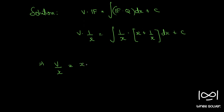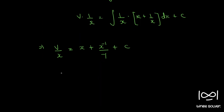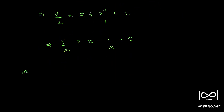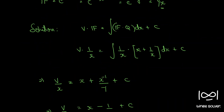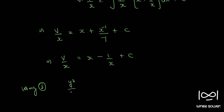Evaluating: 1/x times x equals 1, so integral of 1 is x. Plus integral of 1/x squared, which is x to the minus 1 over minus 1. So v/x equals x minus 1/x plus c. Substituting back v equals y squared, we have y squared divided by x equals x minus 1/x plus c.